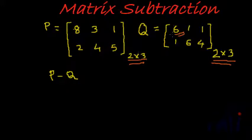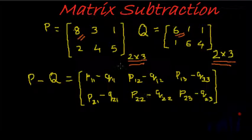So we need to subtract Q 1 1 from P 1 1 to arrive at the first row, first column element of the subtracted matrix. Let's see how to do this. So the answer will be given by P 1 1 minus Q 1 1, P 1 2 minus Q 1 2, and so on. So what is P 1 1 minus Q 1 1?